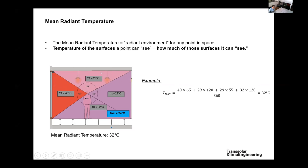The impact of each surface changes with distance. If you are nearer to a very hot surface, it subtends a bigger angle, so its impact on the mean radiant temperature is greater. That's why when we are very near cold surfaces, we feel colder than when we are further away. Mean radiant temperature thus has a spatial distribution — it changes depending on where you stand in a space.